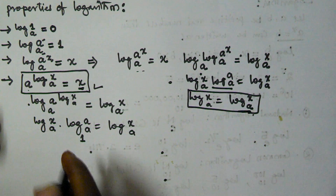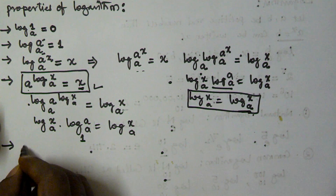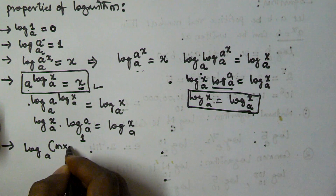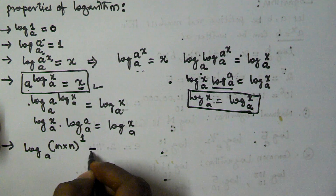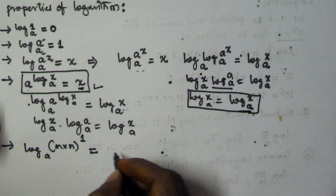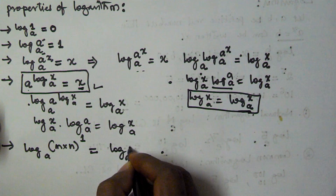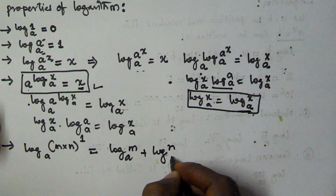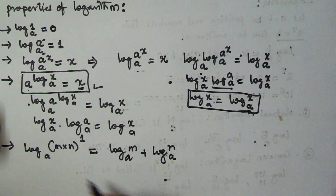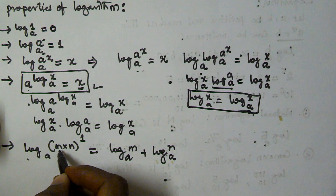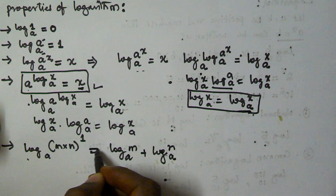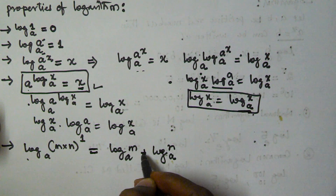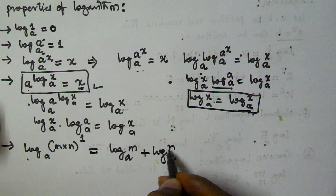The next property is log base a of (m × n). This is going to be equal to log m base a plus log n base a. So if log base a has a value that is a multiplication of two values, that is going to be equal to log m base a plus log n base a.